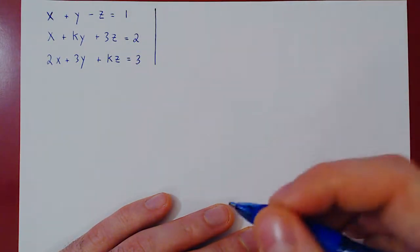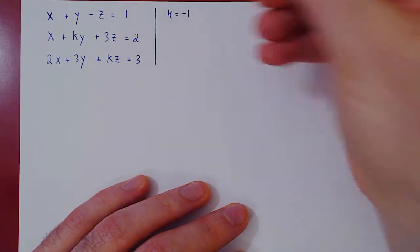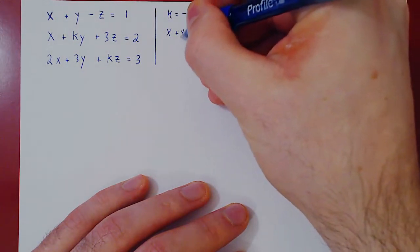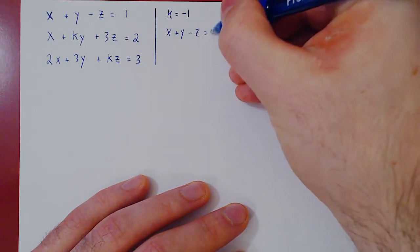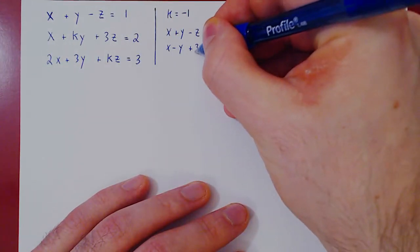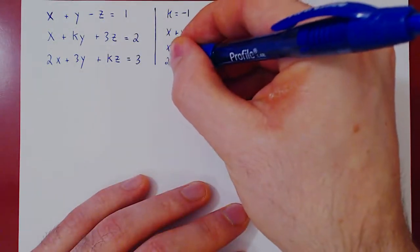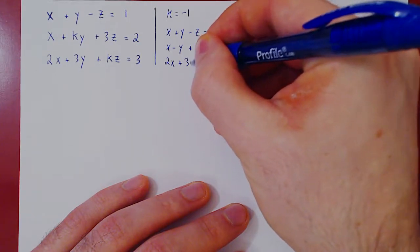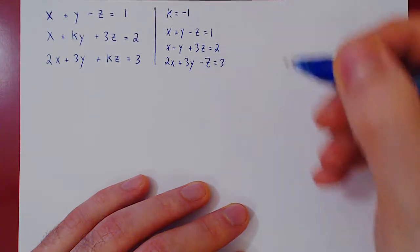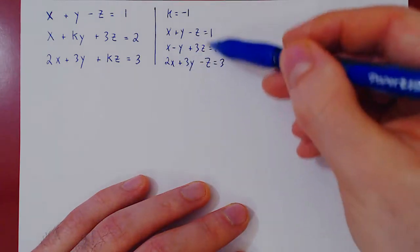Let's consider two examples of this. If we take k to be, say, negative 1, then the linear system becomes x plus y minus z equals 1, x minus y plus 3z equals 2, and 2x plus 3y minus z equals 3. And so you see, if you replace k by negative 1, then you get this linear system.